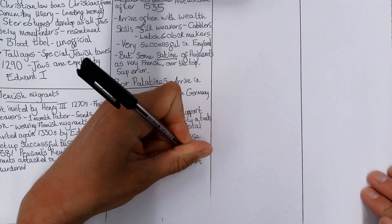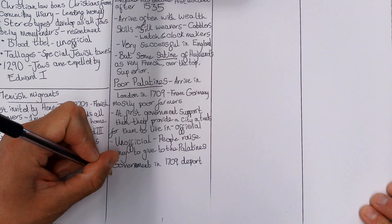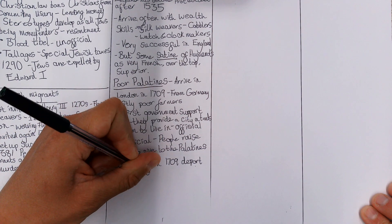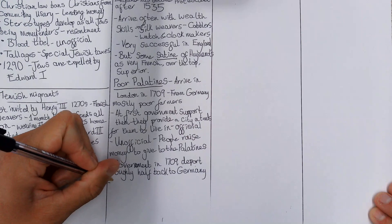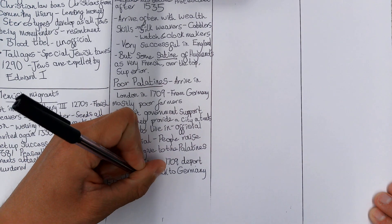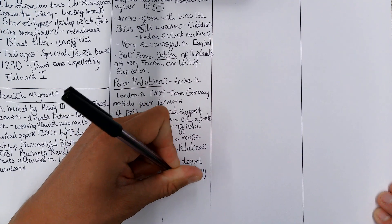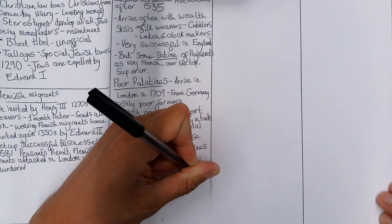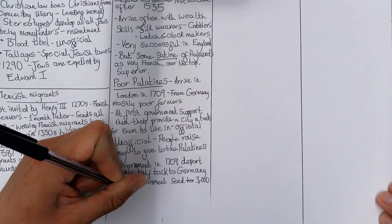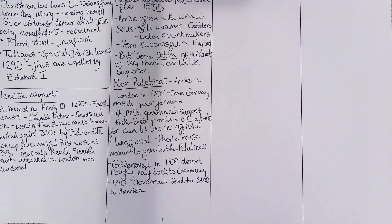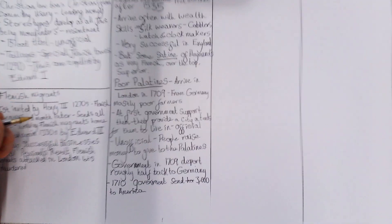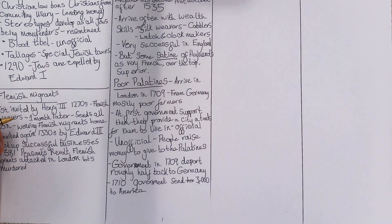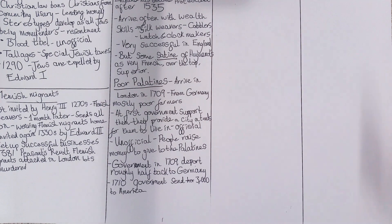So the government in 1709 deports about half of them — roughly five or six thousand — back to Germany. Then in 1710 the government sends roughly three thousand to America, because actually that was why lots of the Poor Palatines came in the first place: they wanted to get to America, which was then largely a British colony — the 13 Colonies.